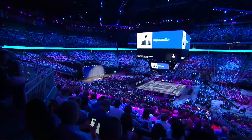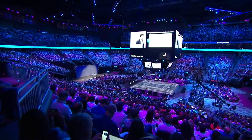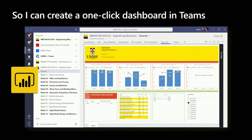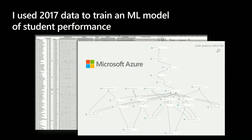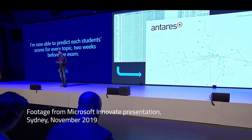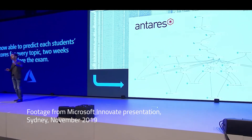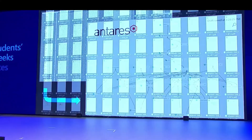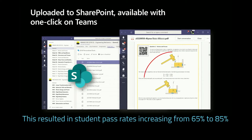How can we turn all of that data into new material? By integrating all of these systems, I have very highly structured data on SQL, and I can create a one-click Power BI dashboard for students to get their marks. I used 2017 data to train an Azure Machine Learning model to correlate all of the information against student performance. We automatically assembled 500 individual personalized optimized study packs for every student, based on the prediction of not only their exam result, but their exam result for every individual question — two weeks before sitting it. Pretty cool, right?